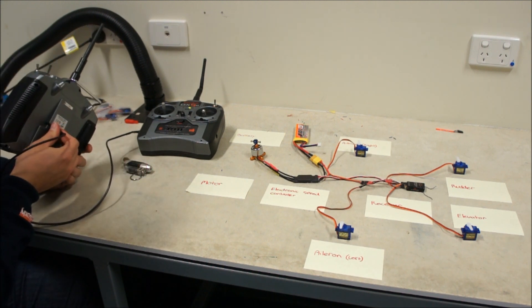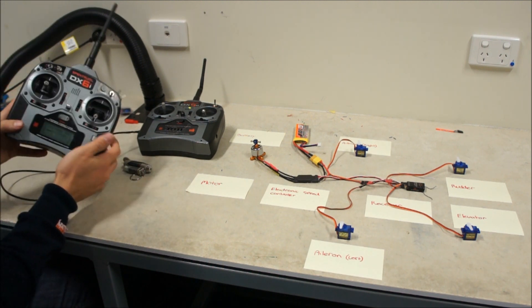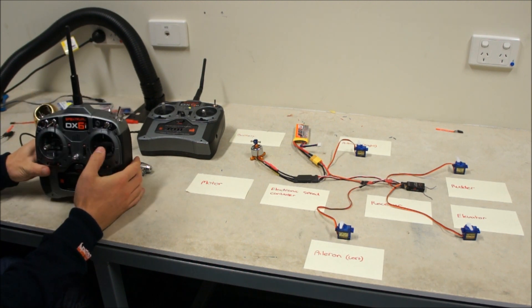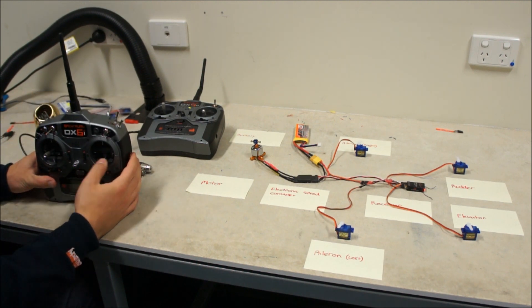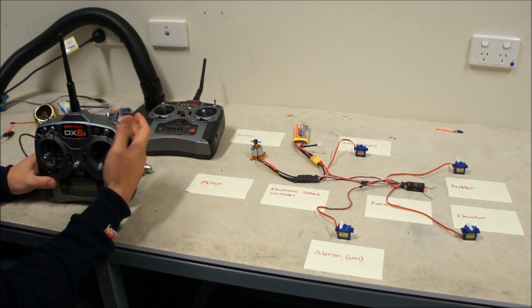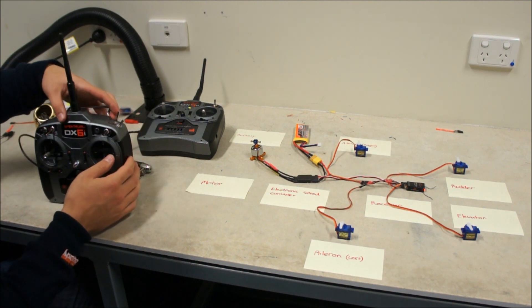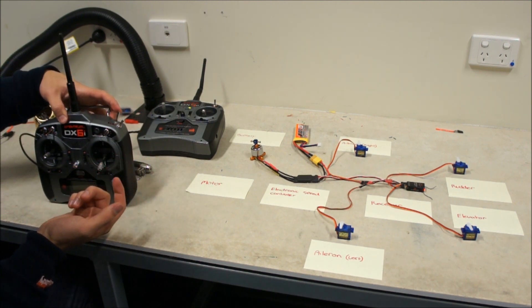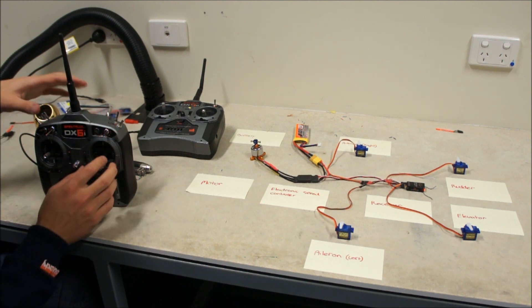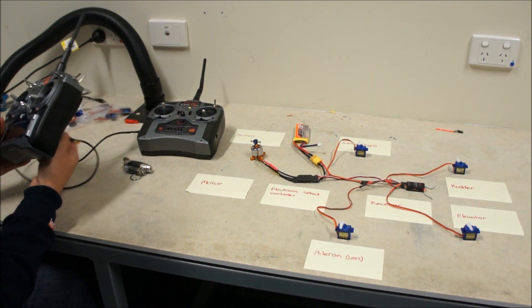So plug that in and that seems to power it up. I can turn that one on to turn the transmitter on. Now I've got ailerons there. If I hold down the trainer, and this is the thing that tells you if it's going to work or not. If I, I'll just take that one out for a second.